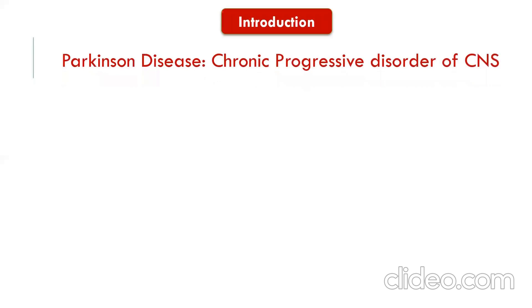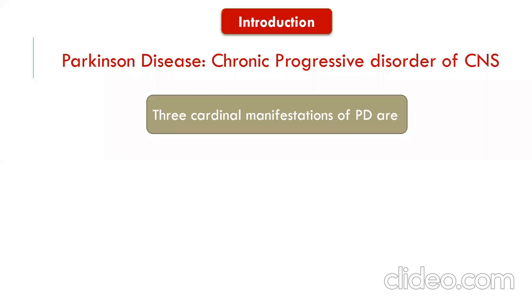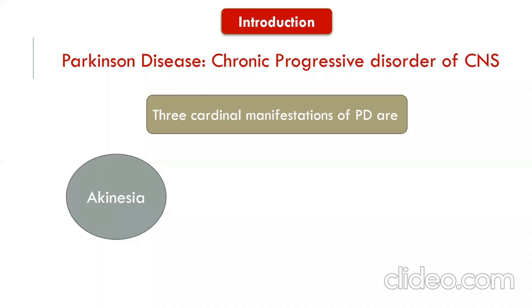Now, what is Parkinson's? Parkinson's disease is a chronic progressive disorder of the central nervous system which results from damage to cells located in the basal ganglia of the brain. The three cardinal manifestations of Parkinson's disease are: first, akinesia, also called bradykinesia. This is a lack of or difficulty in initiating voluntary muscle movement, and in advanced stages is characterized by frozen muscle resulting in mask-like faces, impaired posture, reflexes, and inability to care for oneself.